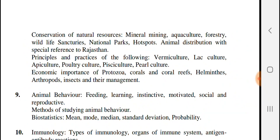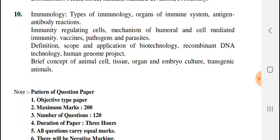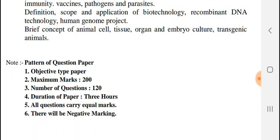The next unit covers animal behavior and biostatistics, and the 10th unit is immunology. We will provide all these lectures. The paper pattern is objective type — 200 marks, 120 questions, duration 3 hours, with negative marking. We will upload these lectures soon, so please study well. All the best, thank you.